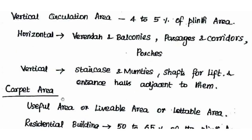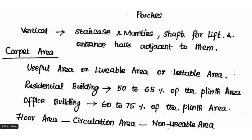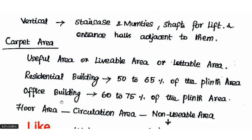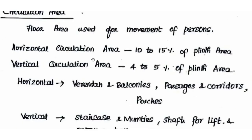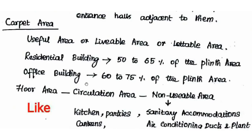Horizontal circulation area includes veranda, balcony, passages, corridors, and posts. Horizontal movements are used for movement via doors; vertical movements for persons going up and down like stairs. Carpet area is the useful area, livable area, or lettable area. In residential buildings, carpet area is 50–65% of plinth area; in office buildings, it is 60–75% of plinth area.